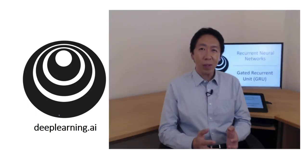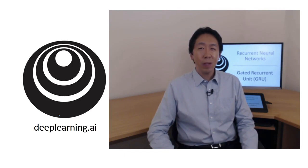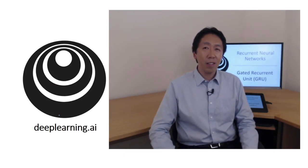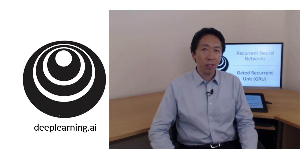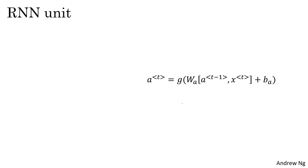You've seen how a basic RNN works. In this video, you'll learn about the gated recurrent unit, which is a modification to the RNN hidden layer that makes it much better at capturing long-range connections and helps a lot with the vanishing gradient problem. You've already seen the formula for computing the activation at time t: it's the activation function applied to parameter W_a times the activations for the previous time step, the current input, plus the bias.